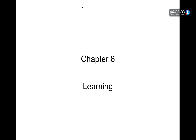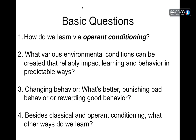Chapter 6, Learning, Part 2. Basic questions we're going to be addressing in this lecture: How do we learn via operant conditioning? What various environmental conditions can be created that reliably impact learning and behavior in predictable ways? Changing behavior — what's better: punishing bad behavior or rewarding good behavior? Besides classical and operant conditioning, what other ways do we learn?